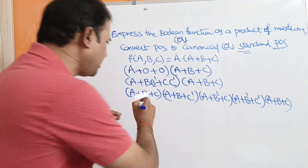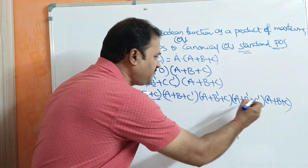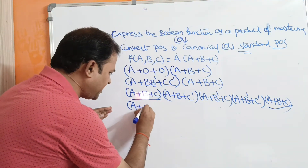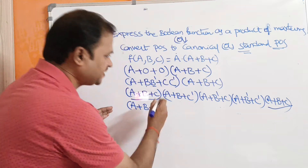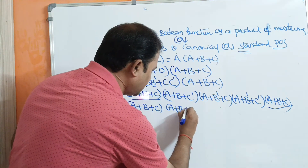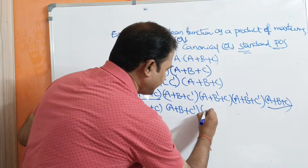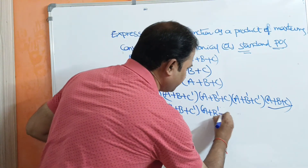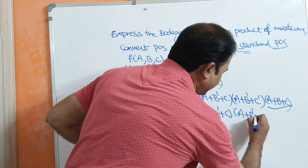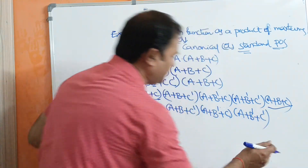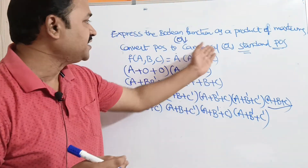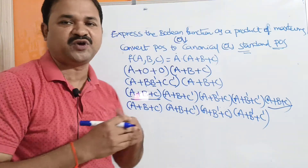Observing the expanded terms: a + b + c appears twice, so write it only once. Then a + b + c' only once, then a + b' + c only once, and a + b' + c' only once. If we observe this function, it is now in the form of canonical or standard POS.